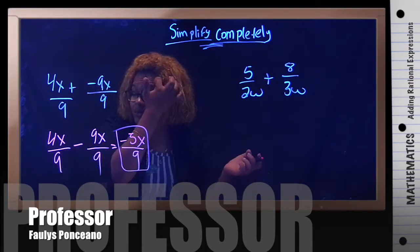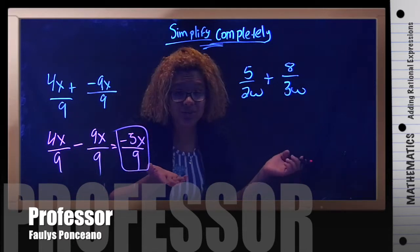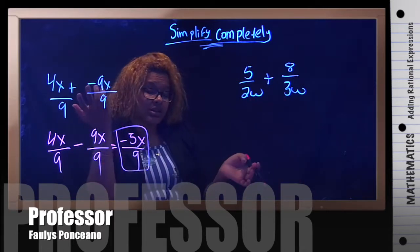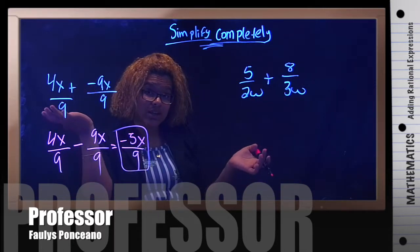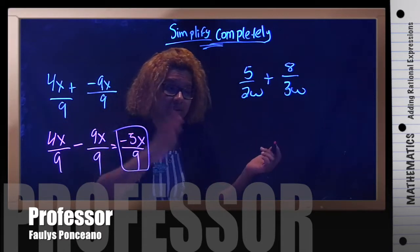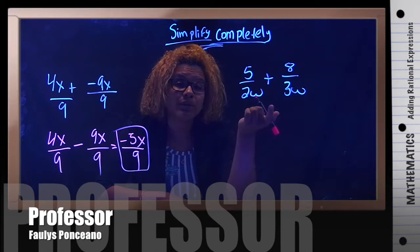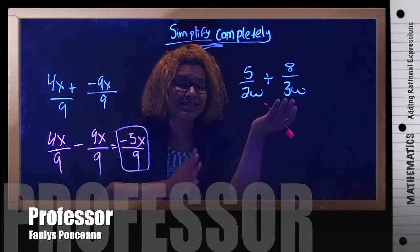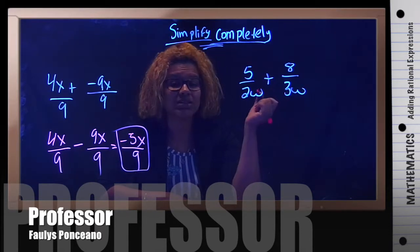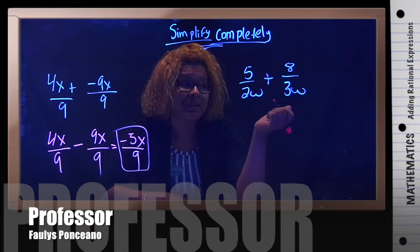Now in the other example, you're doing the same. You're adding fractions. Now the denominators, are they the same? No, they're not. So how do we make them the same? Well, the least common denominator between 2w and 3w is 6w. So your least common denominator is 6w.